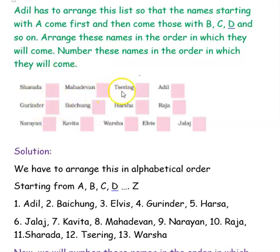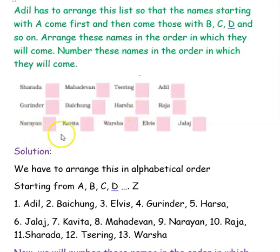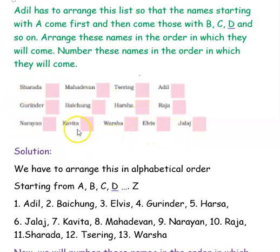The names are: Sharada, Mahadevan, Tressing, Ajil, Guryanjal, Baichu, Harsha, Raja, Narayan, Kavita, Varsha, Elvis, and Jalaj. As you can see, all these names are not in alphabetical order.